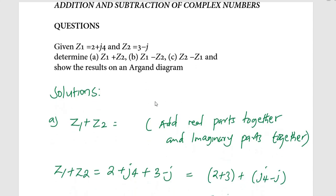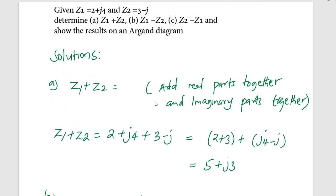For z1 plus z2, we add the two complex numbers by adding the real parts together and the imaginary parts together. So (2 + j4) plus (3 minus j) gives us 2 plus 3, then j4 plus minus j, which equals 5 plus j3, since 4 minus 1 equals 3.